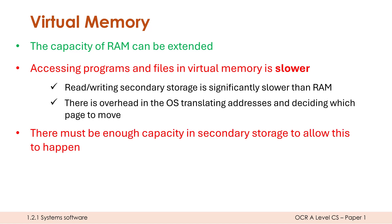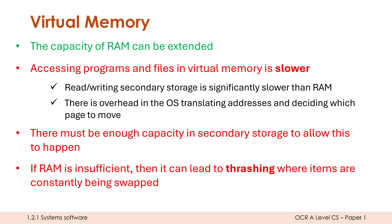This whole plan is predicated on there being enough capacity in secondary storage, which there won't always be. There needs to be potentially a few gigabytes spare in secondary storage to allow this to happen. If secondary storage is near capacity, we can't really use virtual memory at all — it would crash and not allow you to open anything else. The swapping scenario I showed you — where we swap program A's page and program D's page — could happen again and again constantly. That is called thrashing.